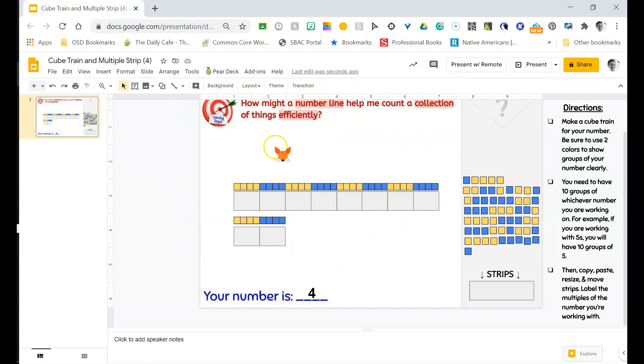Remember I'm trying to figure out how many cubes are in my entire train and I'm going to do that really efficiently by counting by fours or skip counting along a number line, a line with numbers that show the different segments.